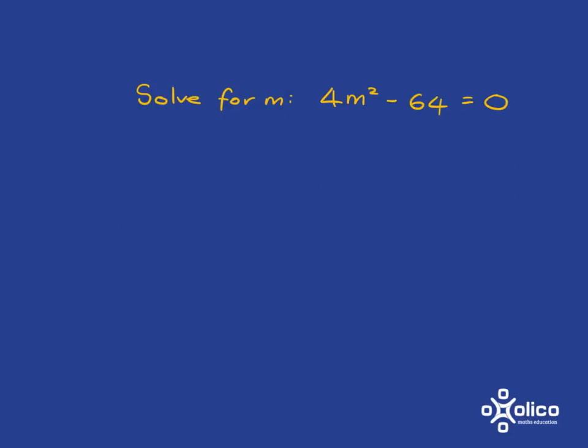Okay, a final question from a past exam paper, and here they've chosen to use m as the variable. There's no problem with that. See if you can write down the first line of the solution. Okay, so got equals to zero on the right so there's no problem there, so what we need to do is factorize. And when we factorize, the first thing we look for is a common factor, and here we do have a common factor of 4, so we can pull that out and we get this.